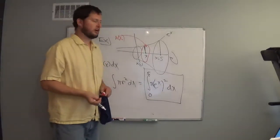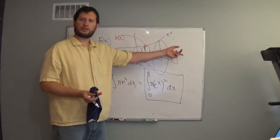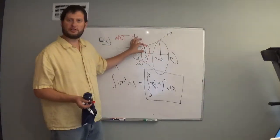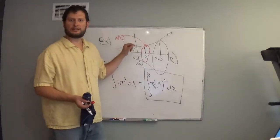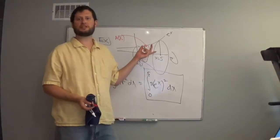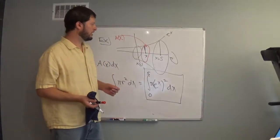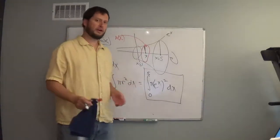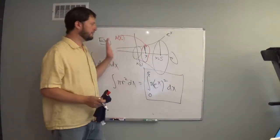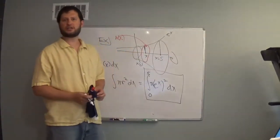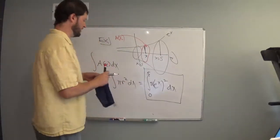Our way to think about these problems is: take the region, look at where you're rotating it, take a small slice of the region, and rotate it around. That's going to make a disk in some cases, and in some cases it's going to make a washer. But pi r squared is the big formula — it gives the area of a disk — and then we integrate that across the entire region, which makes the solid when we revolve it around the axis.